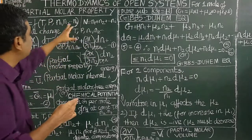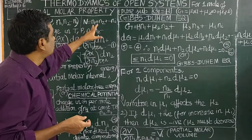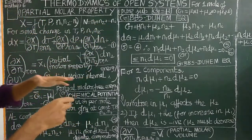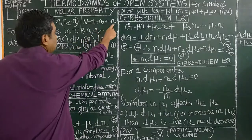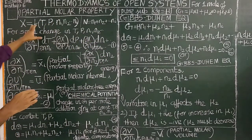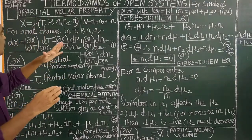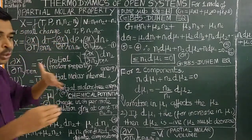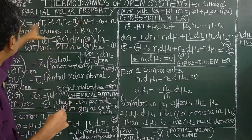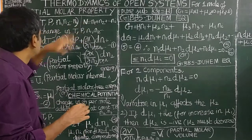So there will be i components. The total number of moles equals N1 plus N2 and so on up to Ni. Now for a small change in temperature, pressure, N1, N2 — these are the several variables on which the thermodynamic function depends.